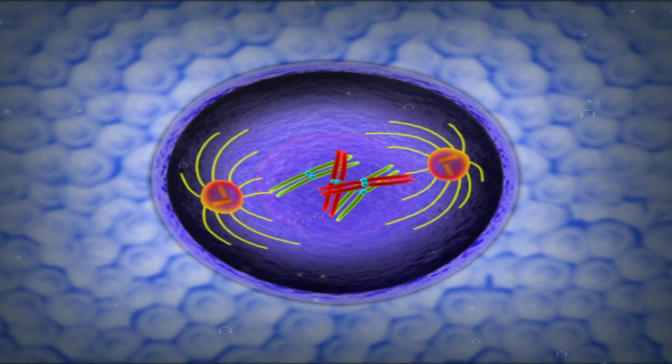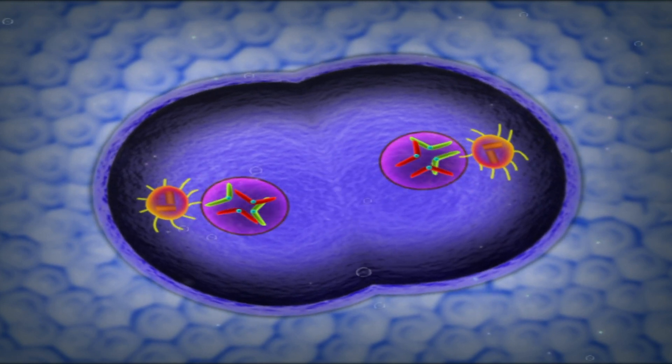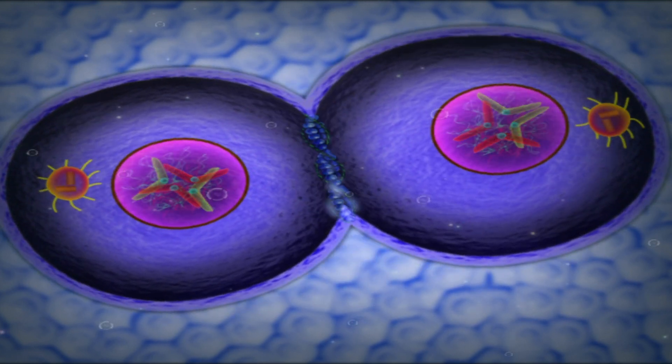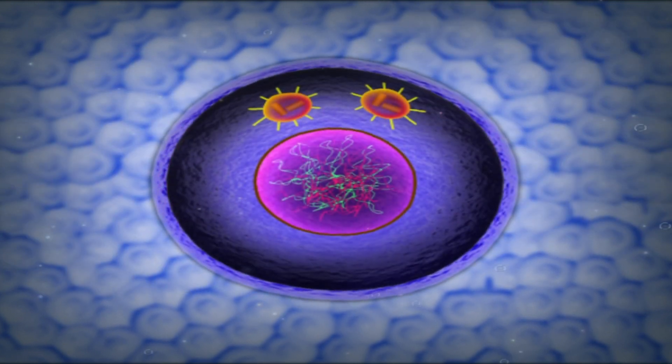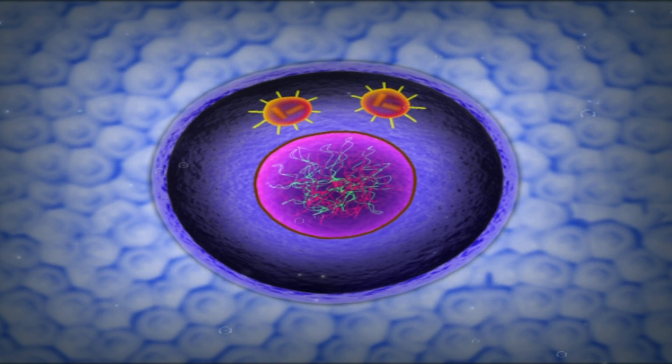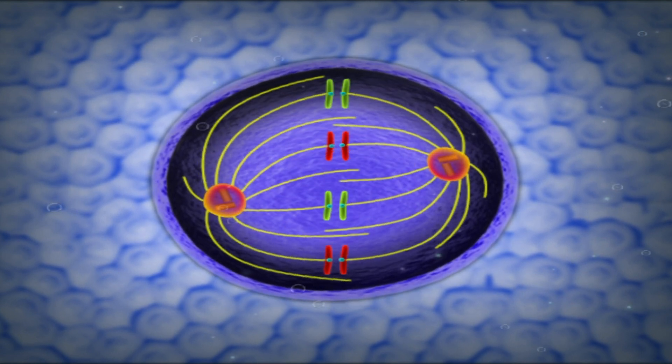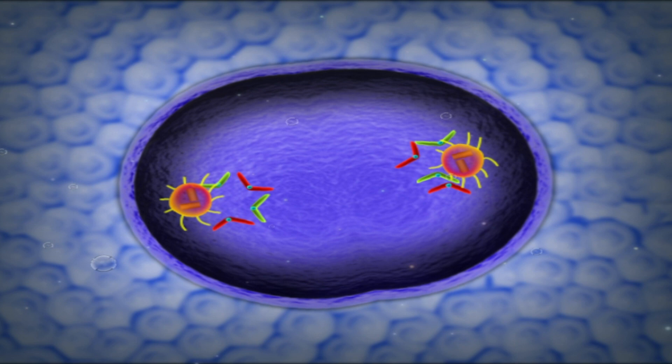During mitosis, the duplicated genetic material is equally distributed to the two daughter cells formed from the dividing cell. The entire process of mitosis is divided into four stages: prophase, metaphase, anaphase, and telophase.